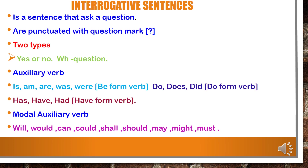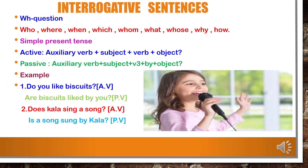Modal auxiliary verbs include: will, would, can, could, shall, should, may, might, must. Wh-question type begins with: what, why, who, where, when, which, whom, whose, and how. Now we will see both types — yes/no type and wh-question type — and how to convert from active voice into passive voice.